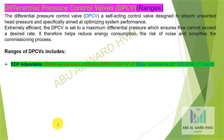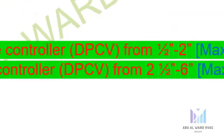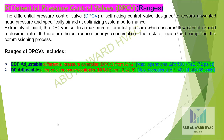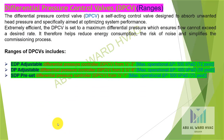The DPCV is set to a maximum differential pressure which ensures flow cannot exceed a desired rate. It therefore helps reduce energy consumption, the risk of noise, and simplifies the commissioning process. Ranges of DPCVs include: EDP — adjustable differential pressure controller, half to two inch, maximum operational Delta P of 500 kPa (72 PSI). DP — adjustable differential pressure controller, two and a half to six inch, maximum operational Delta P of 400 kPa (58 PSI). SDP — preset differential pressure controller, half to one inch, maximum operational Delta P of 500 kPa (72 PSI).